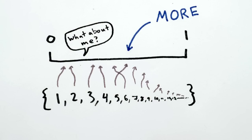And this means that there really are more real numbers between zero and one than there are in the already infinite set of counting numbers one, two, three, four, and so on. So,